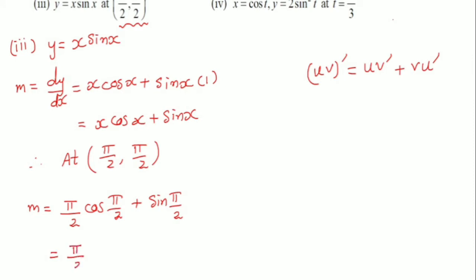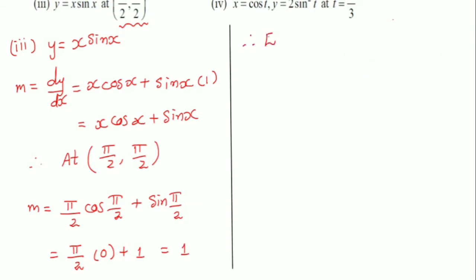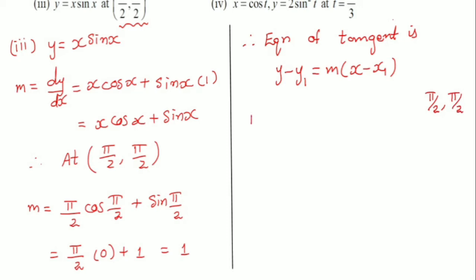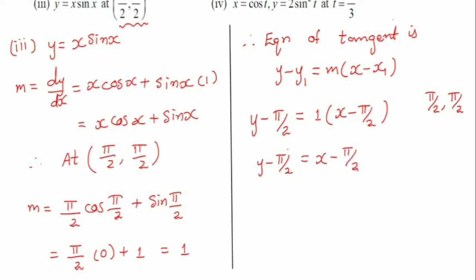At the point (π/2, π/2), slope m is equal to π/2 into cos 90 degree is 0, plus sin 90 degree is 1. So this is equal to 1. Therefore, equation of tangent is y minus y1 is equal to m into x minus x1, with point (π/2, π/2). So y minus π/2 is equal to 1 into x minus π/2. The π/2 terms cancel, therefore x minus y equal to 0. This is the equation of tangent.